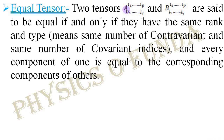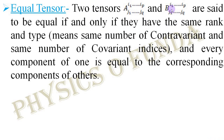In tensor A, the contravariant components are from I1 to Ip. In tensor B also, contravariant components are from I1 to Ip. That means the number of contravariant components in both tensors are equal. The first contravariant index in tensor A is I1, so as in tensor B. The second contravariant index in tensor A is I2, so as in tensor B. Similarly, the last contravariant index in tensor A is Ip, so as in tensor B. All corresponding contravariant components are equal, and similar is the case for covariant components also. That's why the given two tensors are equal tensors.